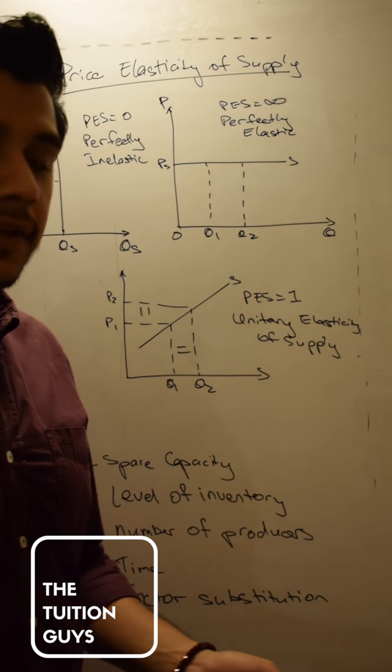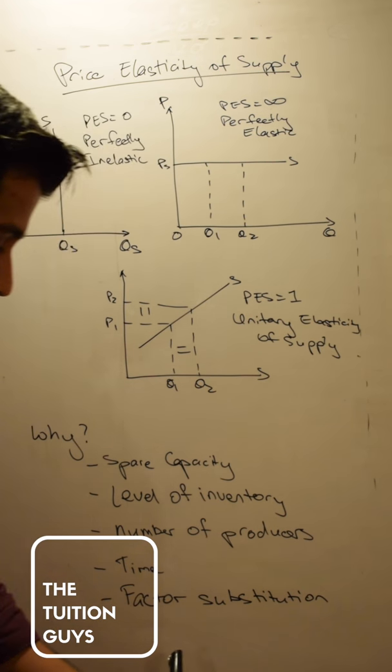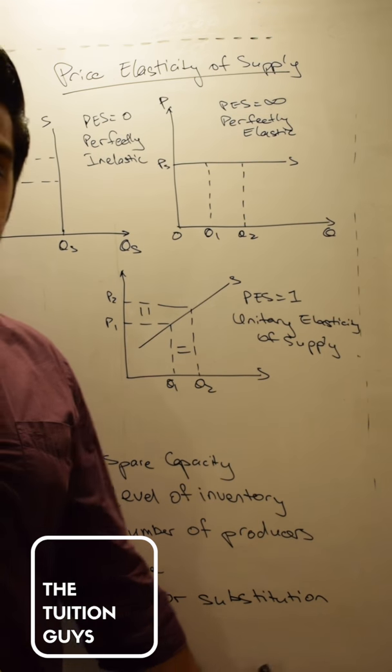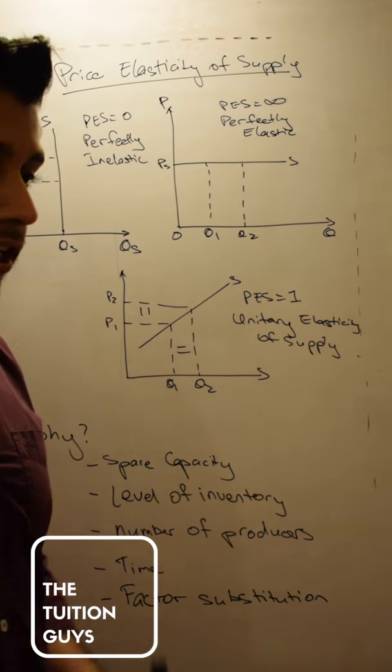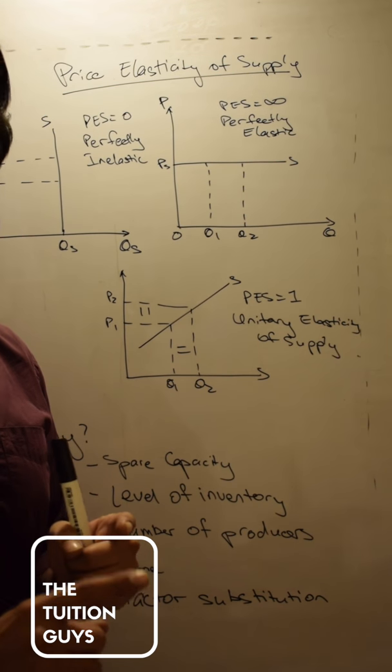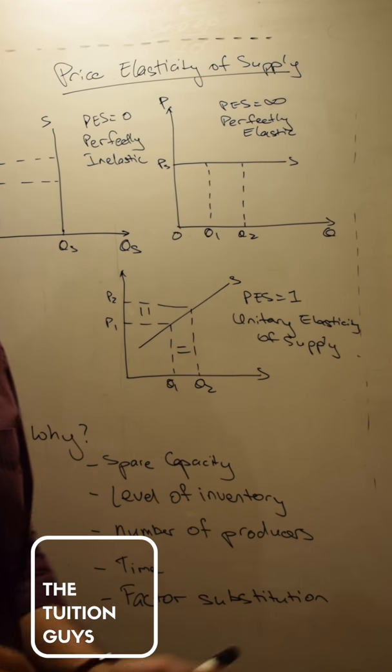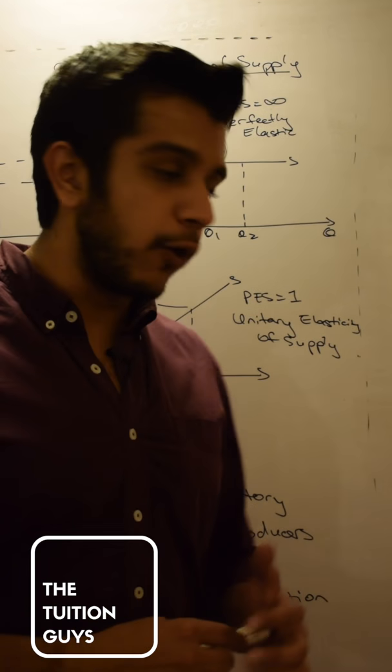The final is factor substitution. To what extent can labor be substituted for capital, and to what extent can capital be substituted for labor? If that transition can happen very swiftly and very quickly, then there should be no issue in actually fulfilling supply. I hope this made sense.